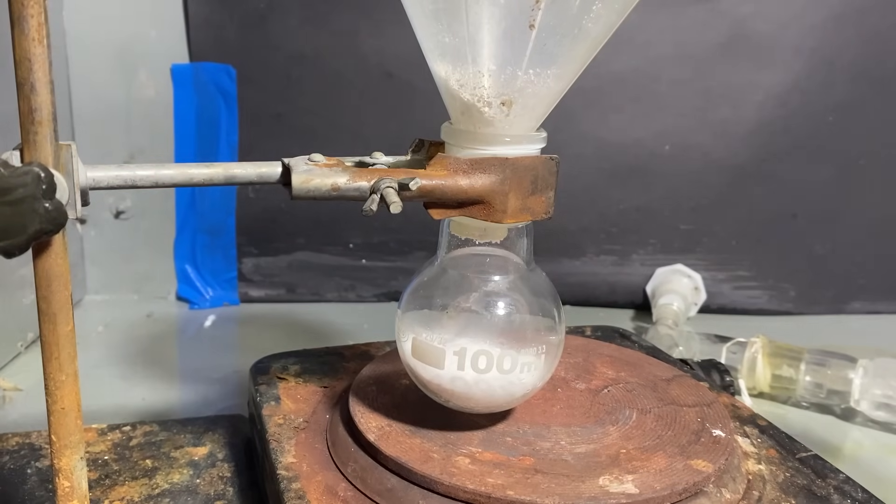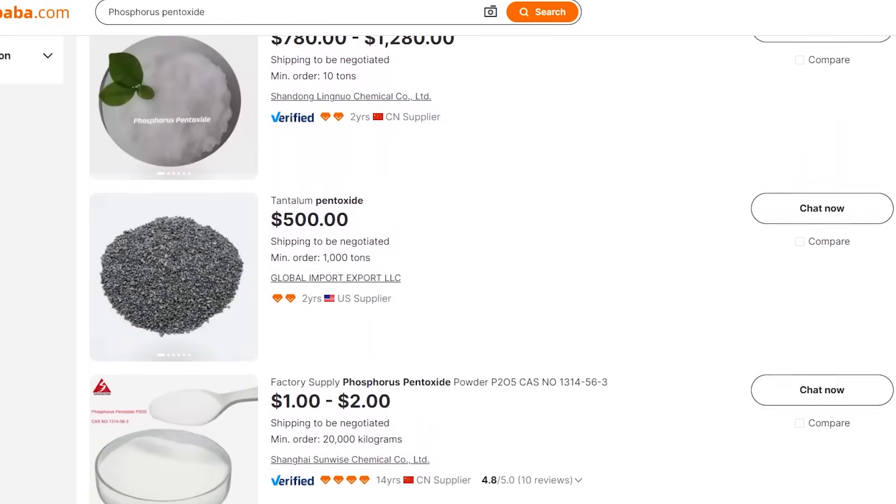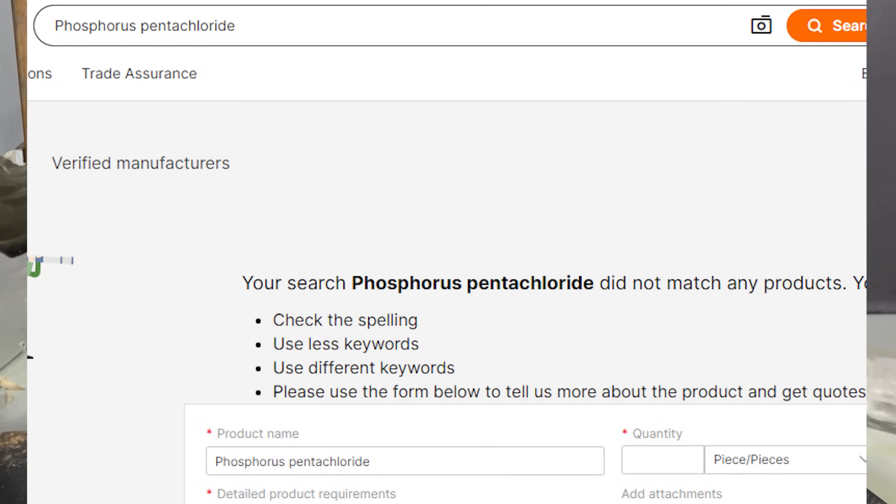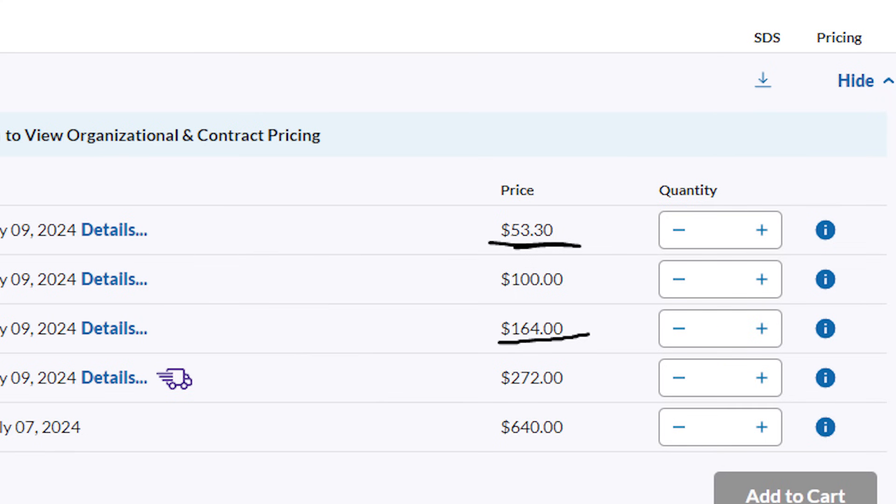So to start, I've added around 10 grams of phosphorus pentoxide into a flask. Phosphorus pentoxide is much more accessible than red phosphorus or even phosphorus pentachloride, and you can find it on websites like Alibaba for reasonable prices, instead of going through those fucking shills from Sigma-Aldrich.